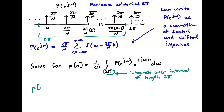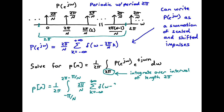We write p(n) = 1/(2π) times the integral from −π/N to 2π − π/N, integrating P(e^jω) which equals (2π/N) times the sum from k = −∞ to +∞ of δ(ω − 2πk/N), multiplied by e^(jωn) dω. This is the expression we need to compute, and note we are integrating correctly over a 2π interval spanning from −π/N to just left of 2π.